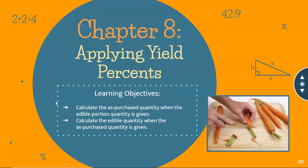To do that, you're going to calculate the as-purchased quantity when the edible portion quantity is provided to you. You'll also calculate the edible quantity when the as-purchased quantity is given to you in specific scenarios.